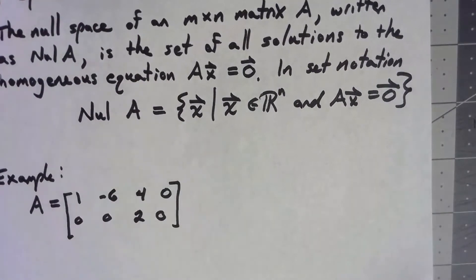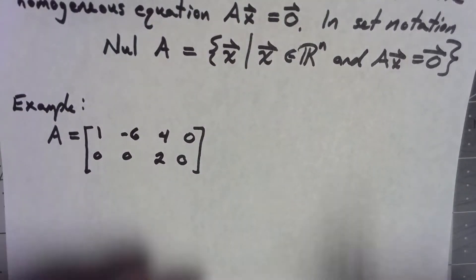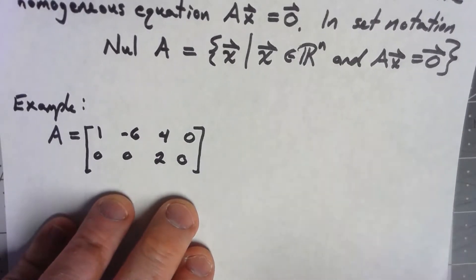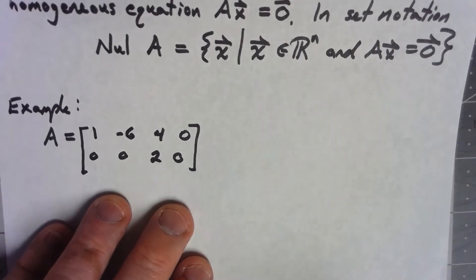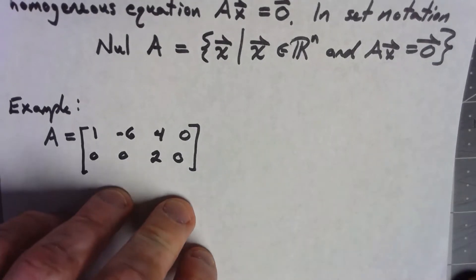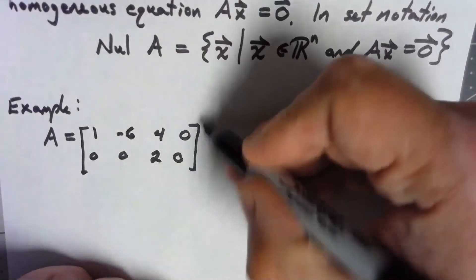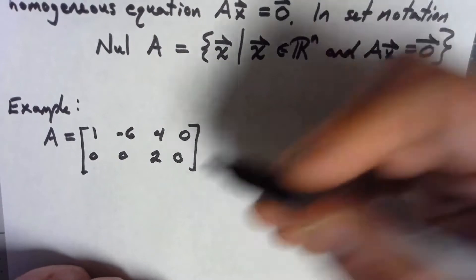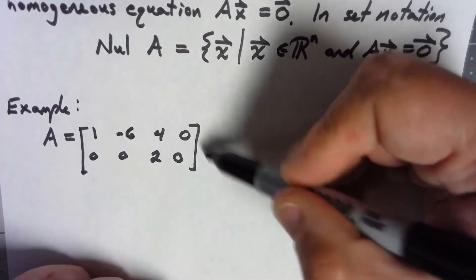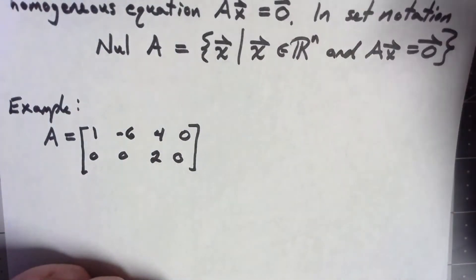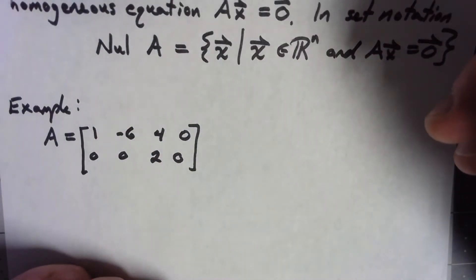Let's go ahead and compute one of these. Let's say this is our matrix A, and we're trying to solve Ax equals zero. As we've done many times, we can do this by performing row operations to get to reduced row echelon form. Technically we augment the matrix, but since we're augmenting with zeros and row operations don't affect those zeros, there's not much point in writing them in.